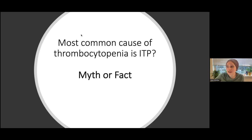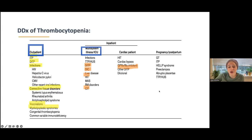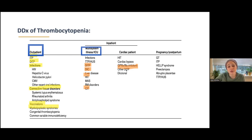ITP is not the most common cause of thrombocytopenia — this is a myth, as everyone or most people said. The easy way to think about thrombocytopenia is depending on what setting we're seeing our patients. In the outpatient setting, you may see more ITP or drug-induced ITP, but for most folks we see inpatient, ICU, or sick patients, it can be related to infections. Drug-induced thrombocytopenia is very common in the hospital. We see DIC more frequently than you would see outside the hospital, and we see a lot of pseudothrombocytopenia. GP2B3A inhibitors in cardiac patients can also cause thrombocytopenia.